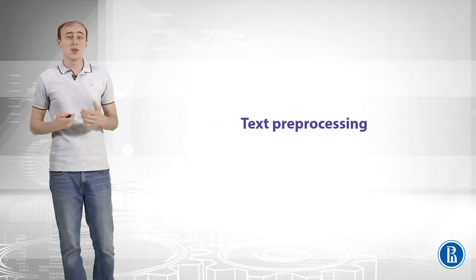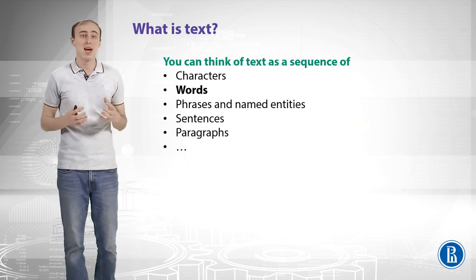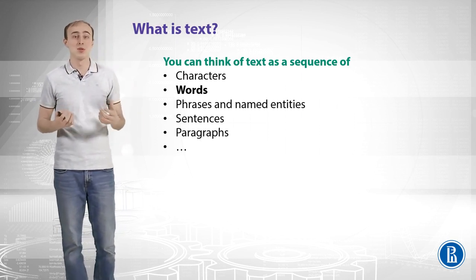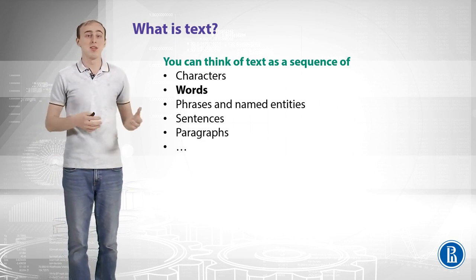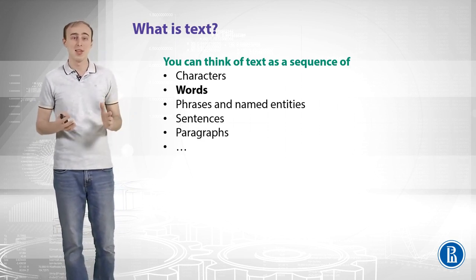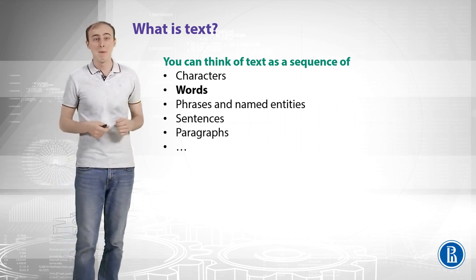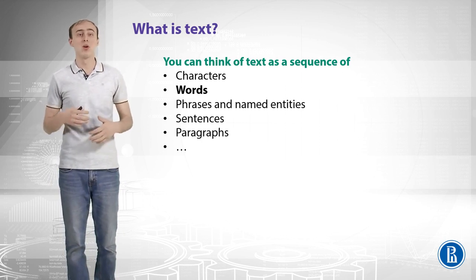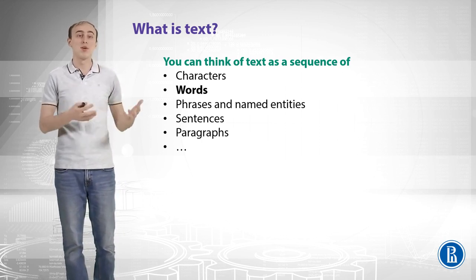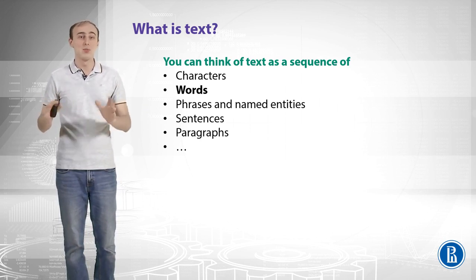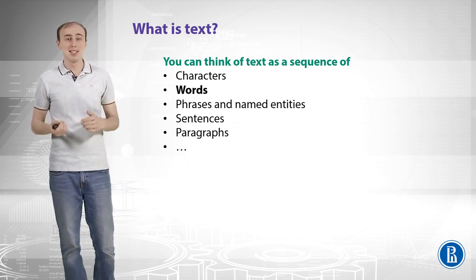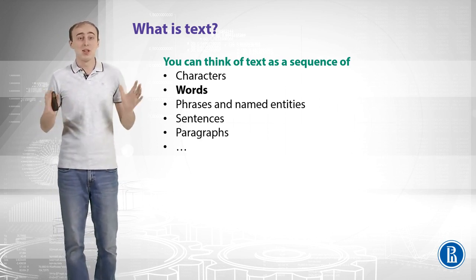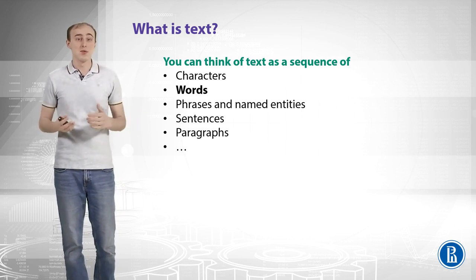We will first start with text preprocessing. The first thing we have to ask ourselves is: what is text? You can think of text as a sequence, and it can be a sequence of different things. It can be a sequence of characters — a very low-level representation — or a sequence of words, or higher-level features like phrases such as 'I don't really like', or named entities, or bigger chunks like sentences or paragraphs.